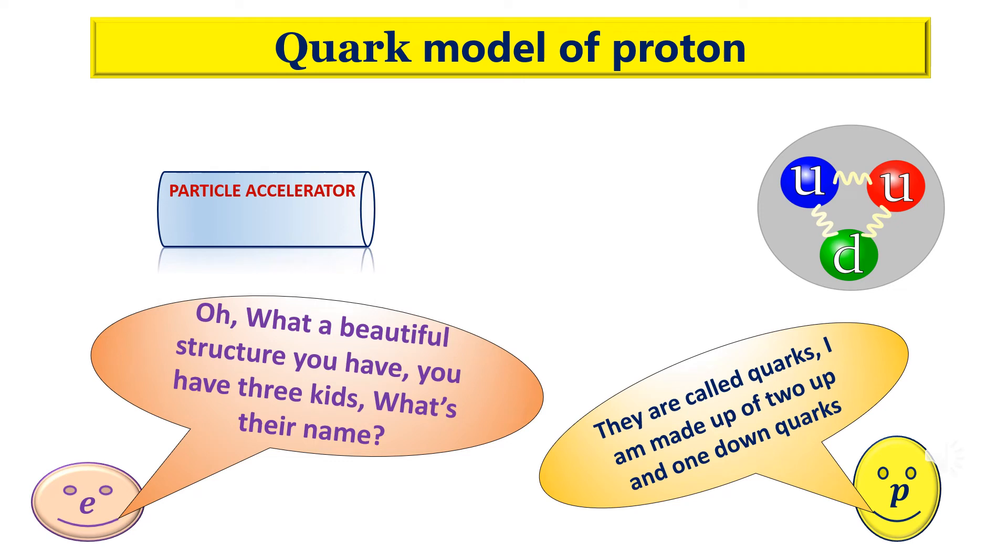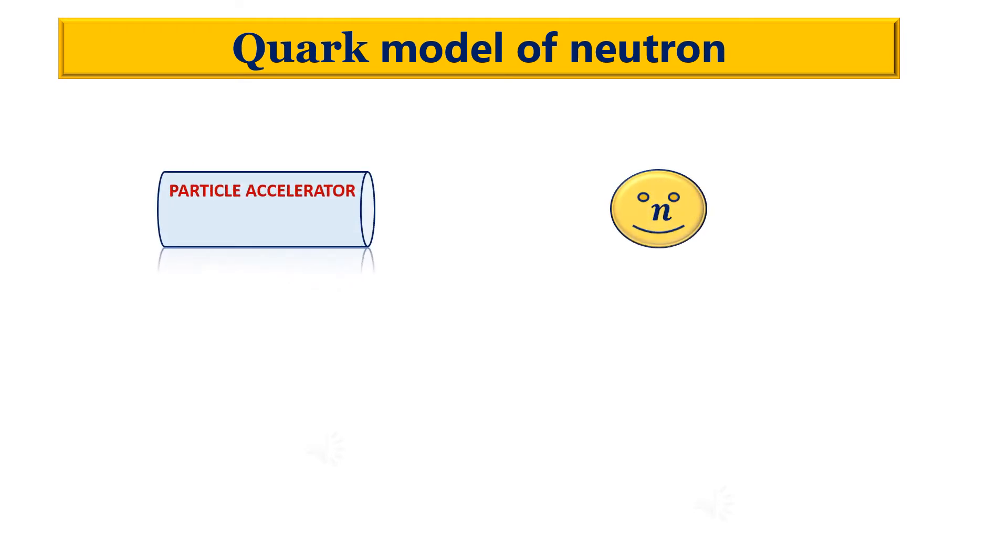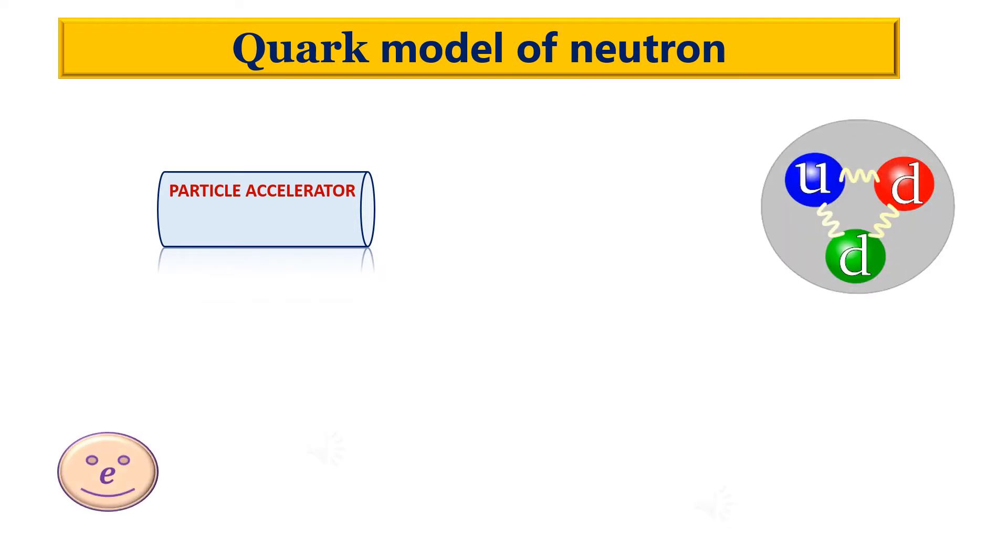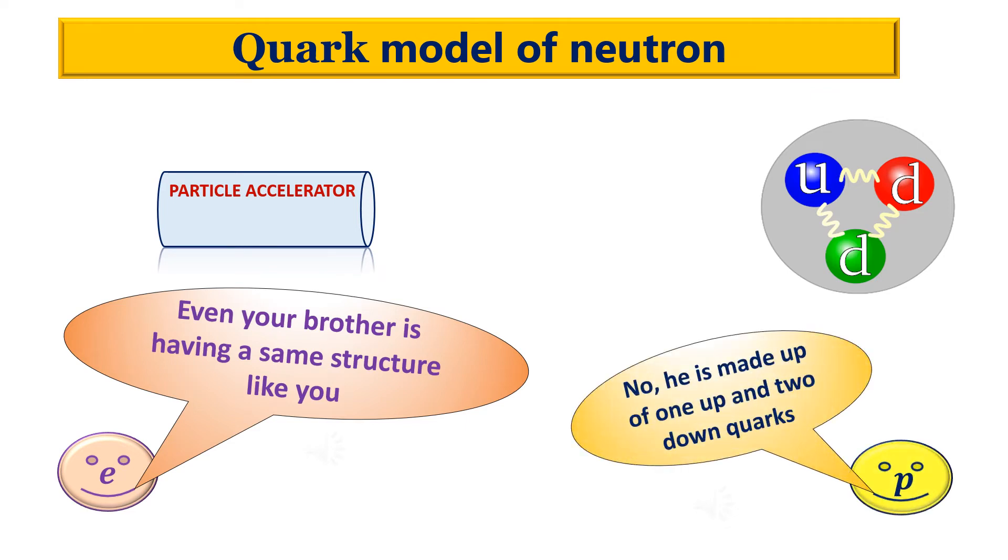They are called Quarks. I am made up of two up and one down Quarks. Even your brother is having a same structure like you. No, he is made up of one up and two down Quarks.